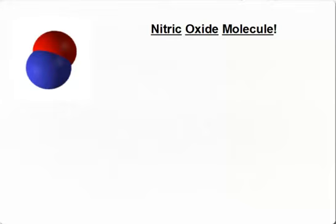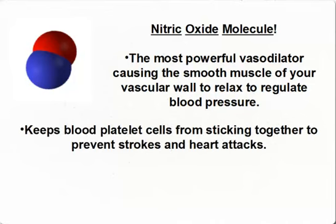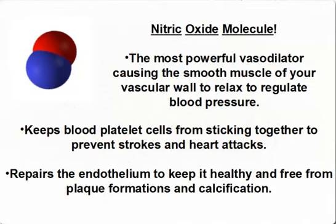Here's how nitric oxide directly addresses each of these keys. First, nitric oxide is your body's most powerful vasodilator, meaning it causes the smooth muscle of your vascular wall to relax, which helps to keep your blood pressure in a normal range — directly benefiting our first key of controlling blood pressure. Second, nitric oxide keeps blood platelet cells from sticking together to naturally prevent blood clots, reducing the number one cause of strokes and heart attacks. Third, nitric oxide helps to repair damage done to the endothelium and keep it free from plaque formations and calcification, as 74% of all cardiovascular disease is related to atherosclerosis and arteriosclerosis.